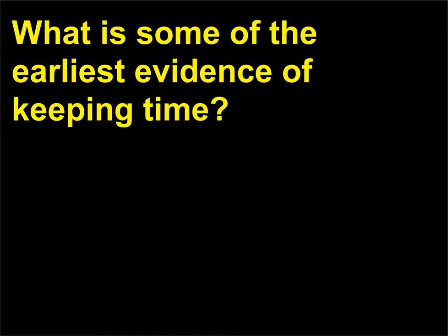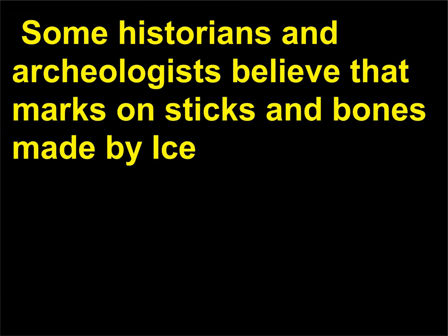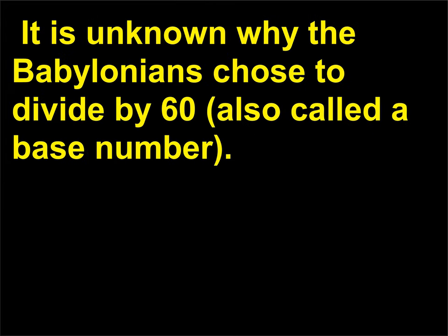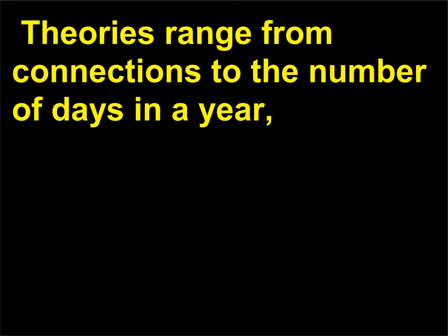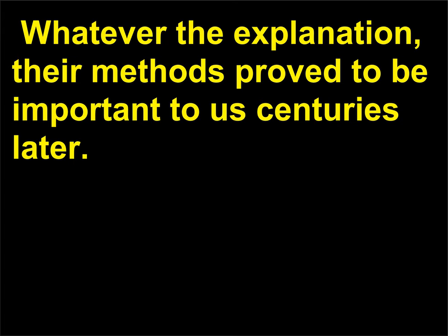What is some of the earliest evidence of keeping time? No one agrees which culture first invented timekeeping. Some historians and archaeologists believe that marks on sticks and bones made by Ice Age hunters are evidence of early timekeeping. It is unknown why the Babylonians chose to divide by 60, also called a base number. Theories range from connections to the number of days in a year, weights and measurements, and even that the base 60 system was somehow easier for them to use.